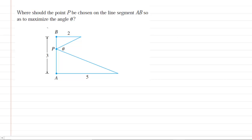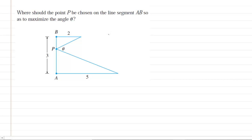In this question, we have to decide where we should place point P on segment AB so that this angle theta is going to be maximized. This is an optimization question, so the first thing we need to do is to draw a picture. This question has supplied us with a picture already, but we want to add a few additional details to the picture to make our process more understandable.